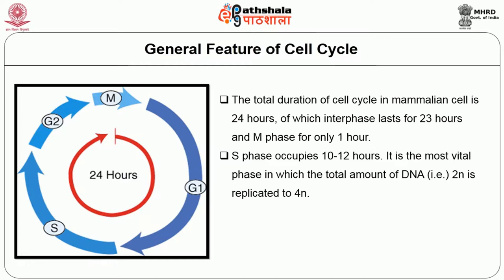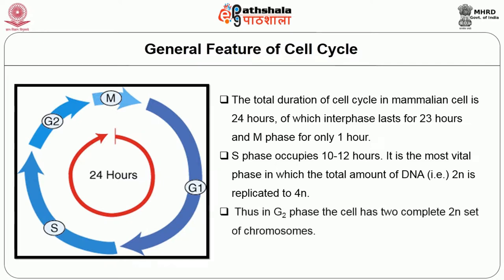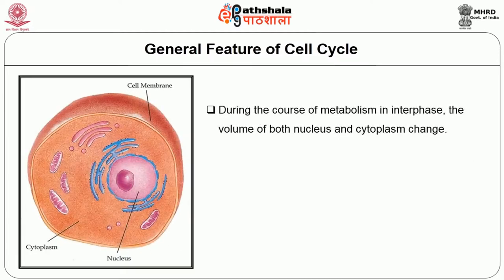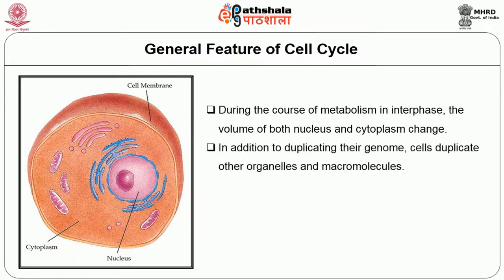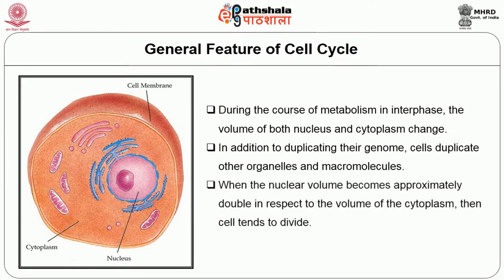S phase occupies 10 to 12 hours because it is the most vital phase, in which the total amount of DNA (2N) is replicated to 4N. Thus in G2 phase, the cell has two complete 2N sets of chromosomes. During interphase metabolism, the volume of both nucleus and cytoplasm change. In addition to duplicating the genome, cells duplicate other organelles and macromolecules. When the nuclear volume becomes approximately double the volume of the cytoplasm, the cell tends to divide.